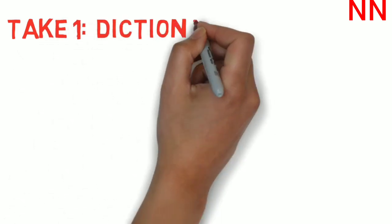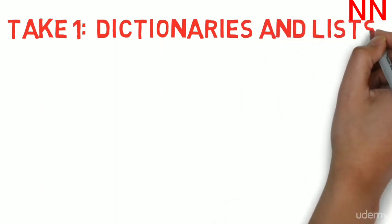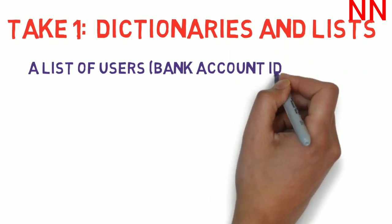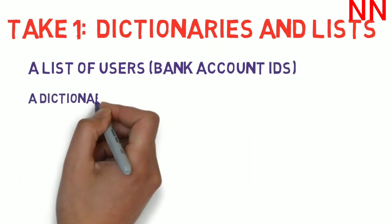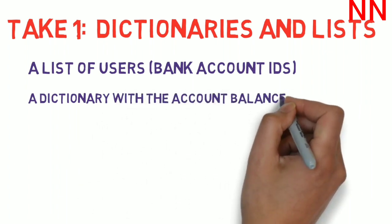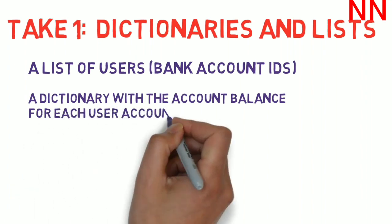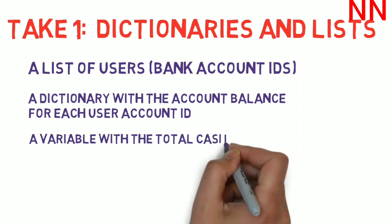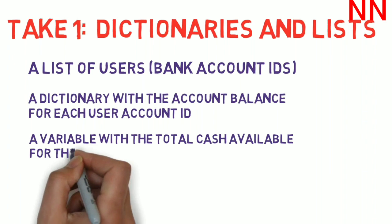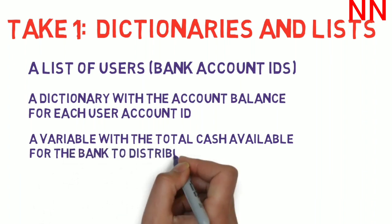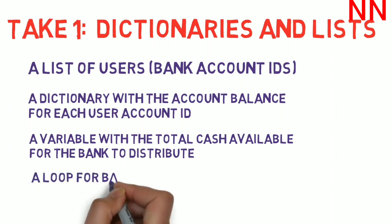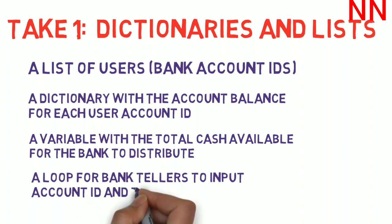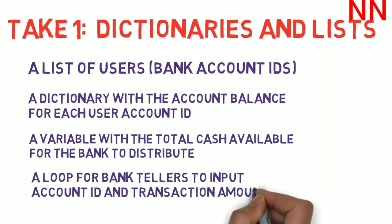The first option is to use dictionaries and lists. So to implement a bank ATM in code, first you need to have a list of users or bank account numbers that could be accessed via this particular ATM. Then you would need a dictionary with the account balance in each of these account IDs. Then you would have to maintain a variable with the total amount of cash that this bank could distribute. So until the cash is greater than zero, the ATM can keep dispensing cash. Then you would set up a while loop. This would continuously keep asking. As an input, it would require the account ID and the transaction amount, how much is being withdrawn or deposited from the ATM.